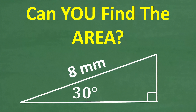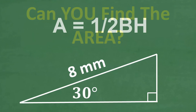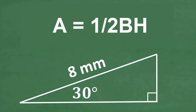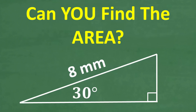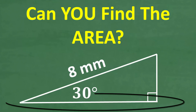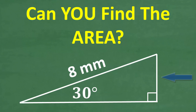We are dealing with a right triangle and to find the area of a triangle we need to calculate the area using this formula: area of a triangle is one half base times height. So we're going to need that formula. But the base of this triangle — we don't have that, and we don't have the height as well. So how do we solve this problem?